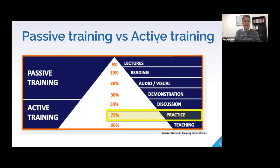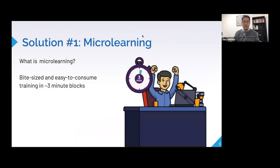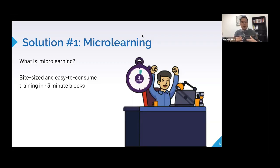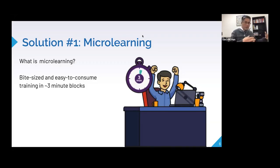Solution number one: micro learning. Micro learning is bite-sized, easy-to-consume training — think three-minute blocks. It's been a buzzword, but the principle is short, consumable learning. This is particularly important in the workplace because learning can happen within your workflow, providing more context. Compared to a long workshop where you're taken away from your work environment, micro learning in shorter chunks makes it easier to connect the dots — addressing both psychological and logistical friction.